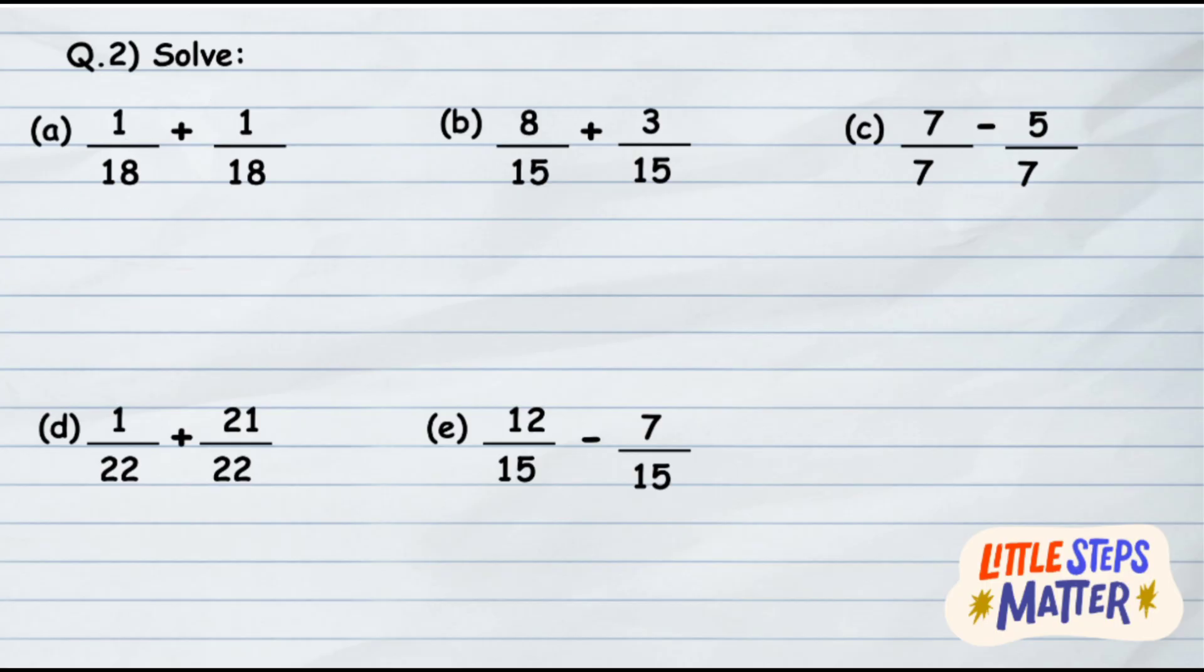The first question is to add 1 upon 18 plus 1 upon 18. This is very simple because the denominators are same. When the denominators are the same, we just simply add the numerators. So 1 plus 1 whole upon 18, which gives 2 upon 18. Now is it in simplest form? No, because 2 and 18 both go in the table of 2. So simply divide both numbers by 2 which gives you the answer as 1 upon 9.